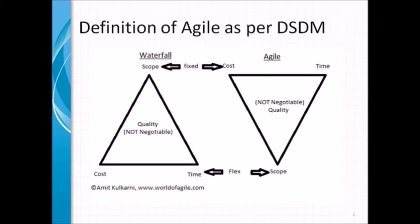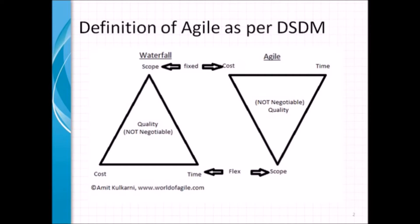Agile methodology, as defined by DSDM, fixes the cost and time and uses prioritization techniques to determine what can be delivered within the given cost and defined time. Quality of course remains central in both approaches. Thus in the traditional methodology scope is fixed, whereas in agile methodology cost and time are fixed and are not negotiable.